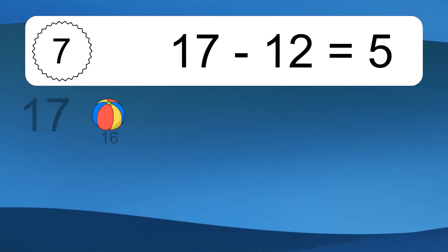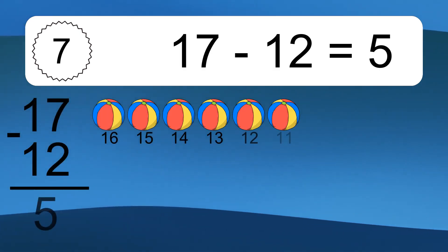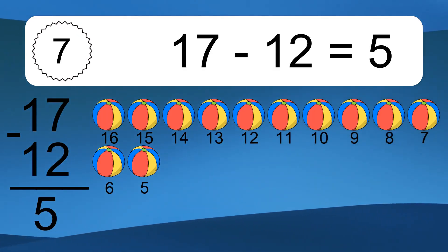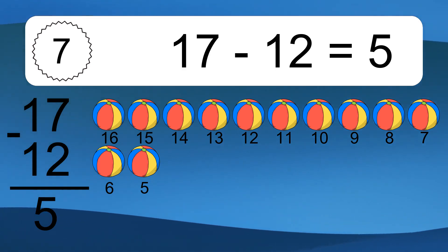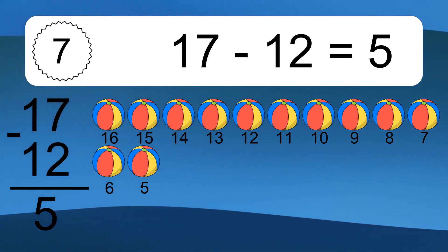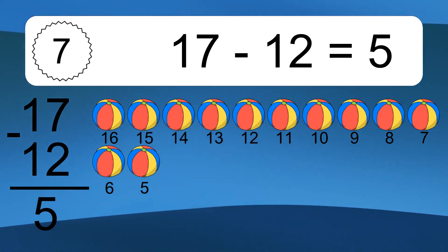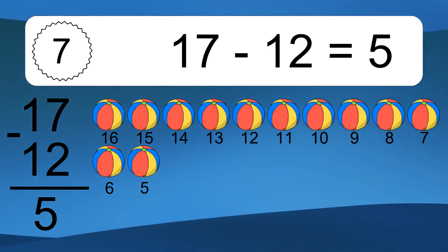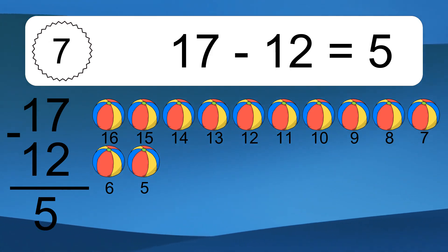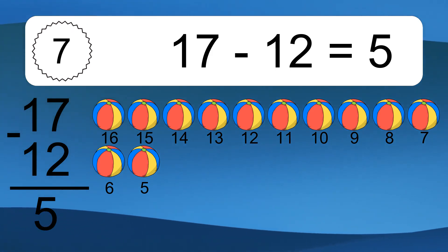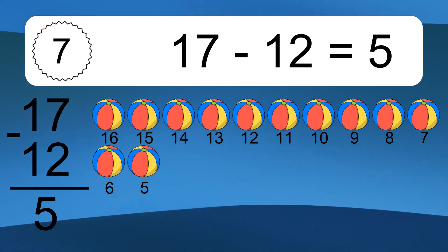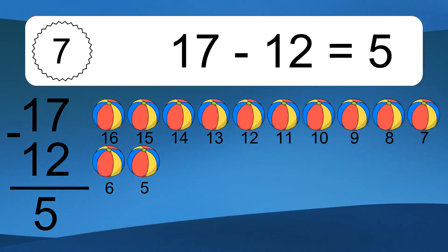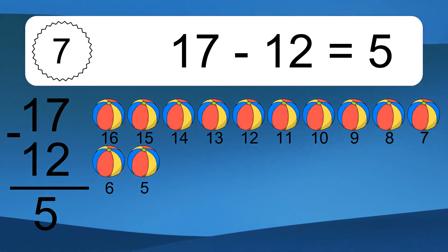17 minus 12 equals what? 17 minus 12 equals 5. Let's count it. 16, 15, 14, 13, 12, 11, 10, 9, 8, 7, 6, 5.